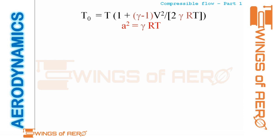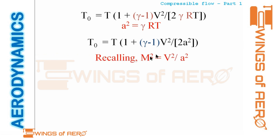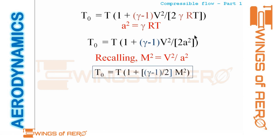Recalling the speed of sound equation: a² = gamma·R·T. Substituting a² in place of gamma·R·T, and recalling that Mach number M = v/a, so v² = M²·a², we arrive at: T₀/T = 1 + (gamma − 1)/2 · M². This is the isentropic temperature relation.